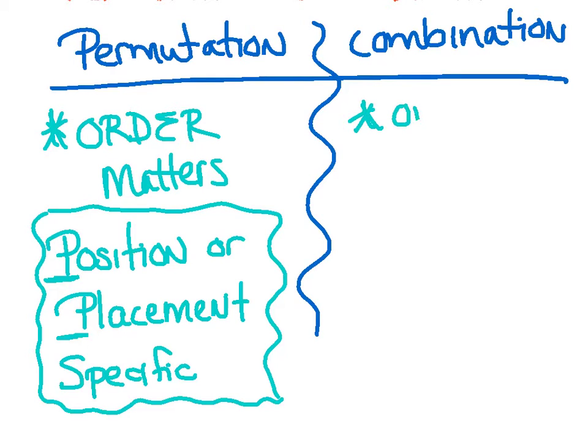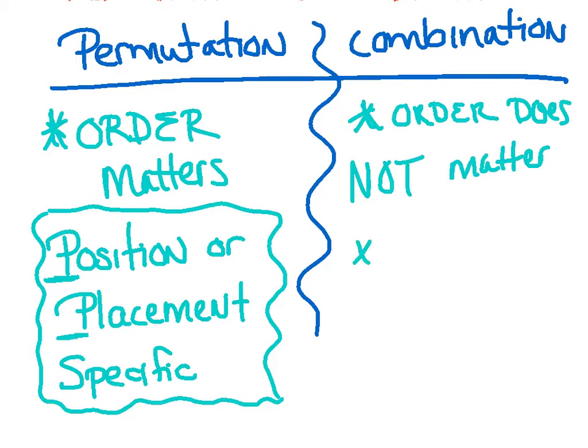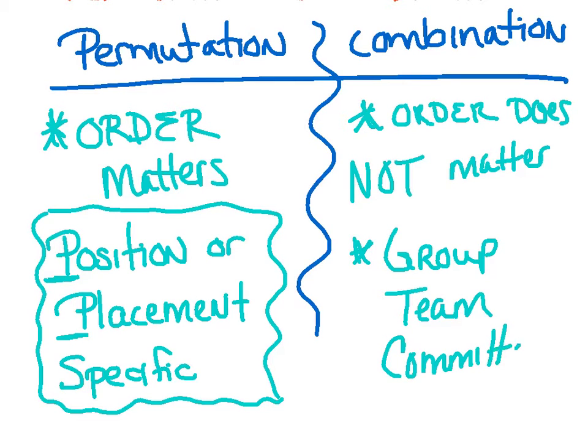Combination, the order doesn't matter. Like that first example I gave you where I said just make a group or a team of five people or four people. You're just picking people and it doesn't matter the order at all. So key words to look for for combination is when you're just creating a random group or team or they like the word committee. When you're just putting together a whole team.